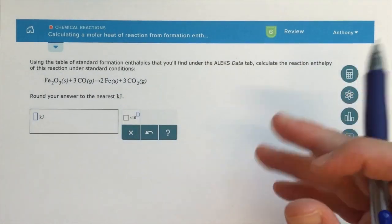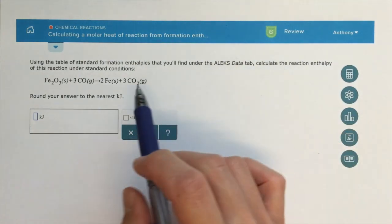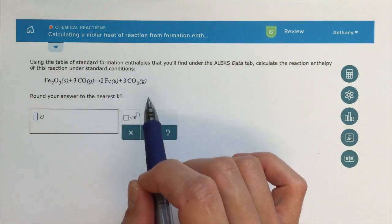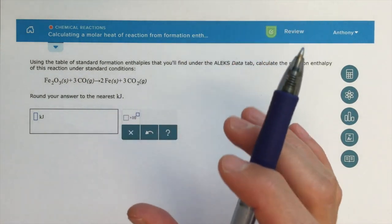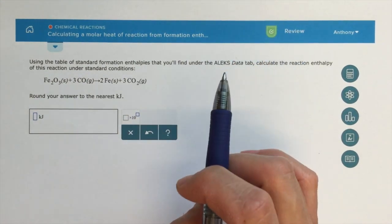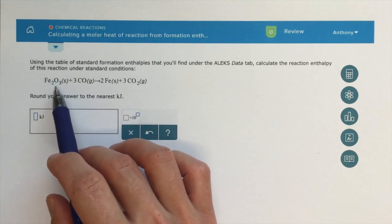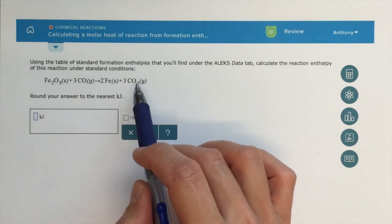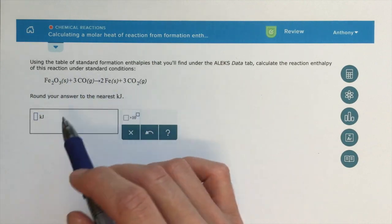So those tables of enthalpies that we see in the back of our textbook or in this ALEKS data tab are going to be under standard conditions, so at standard temperature and pressure for thermodynamic systems, which is 25 degrees Celsius and one atmosphere, and they have basically energies calculated already for us, tabulated for all of these different reagents and products.